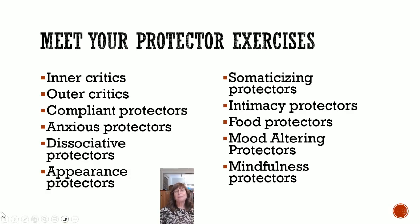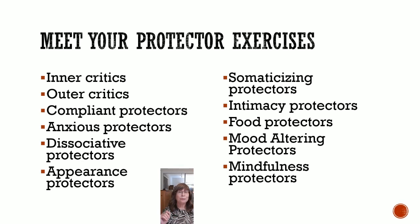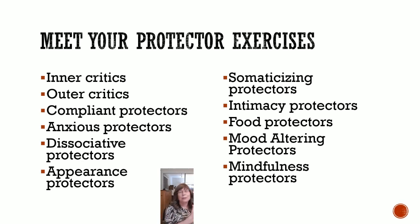For example, your protector might be an inner critic which criticizes you from the inside, or an outer critic that criticizes other people and finds fault with everybody around you. A compliant protector that tells you that you have to always comply with other people's expectations. An anxious protector that's always looking around the corner to see what might happen.